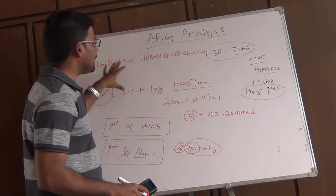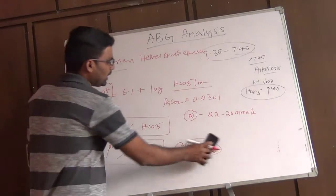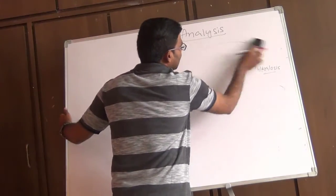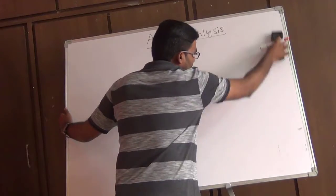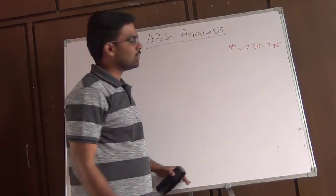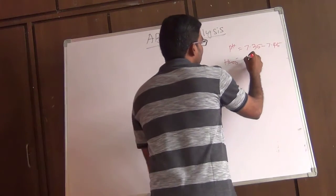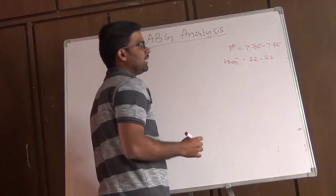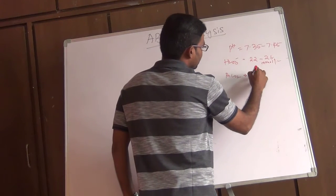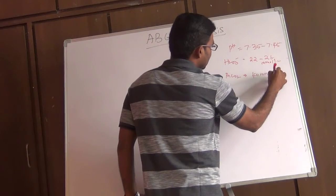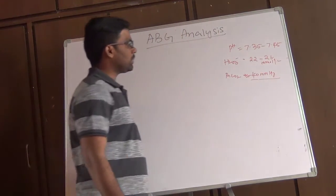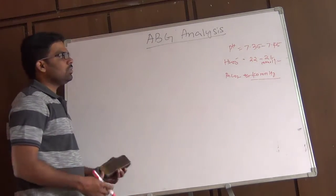Now let us go into the interpretation of ABG. The normal values to remember: normal pH = 7.35 to 7.45; normal bicarbonate = 22 to 26 mmol/L; normal PaCO2 = 20 to 40 mmHg.